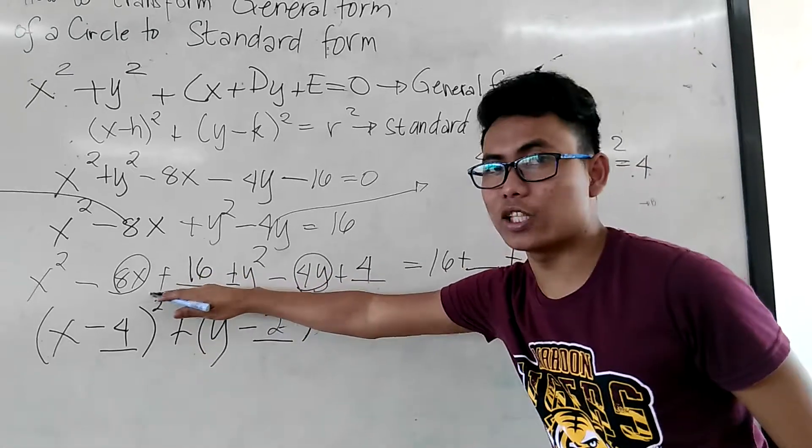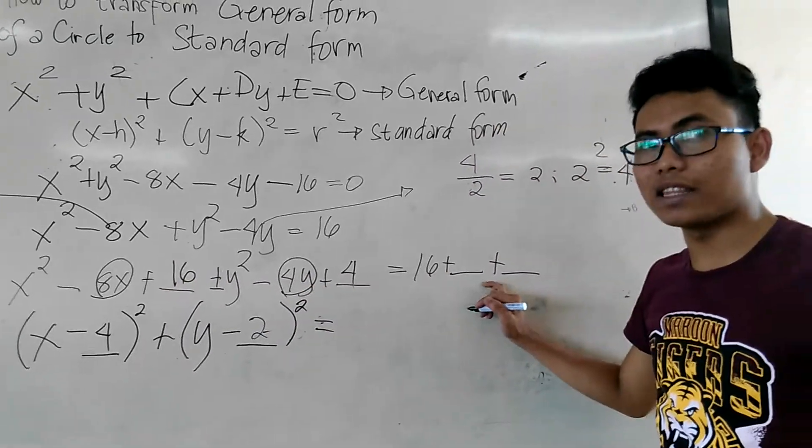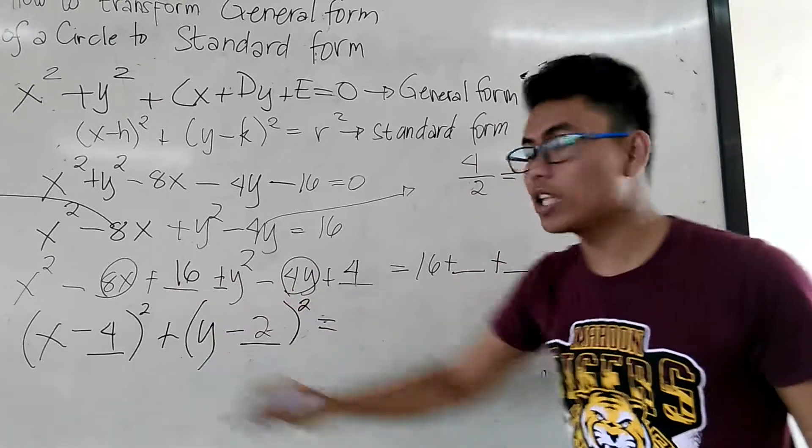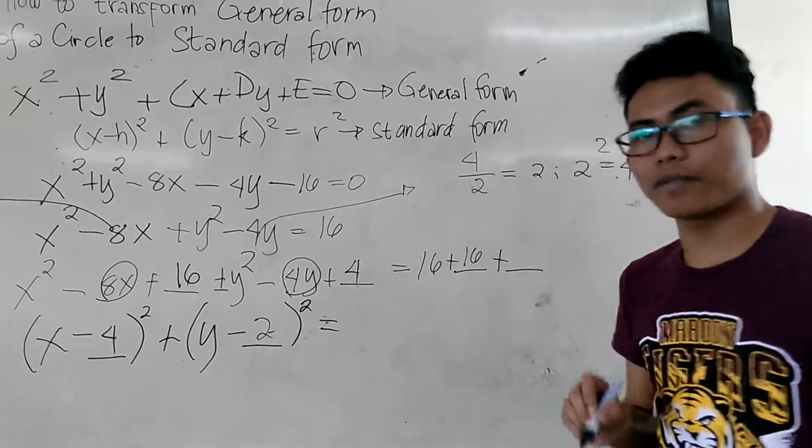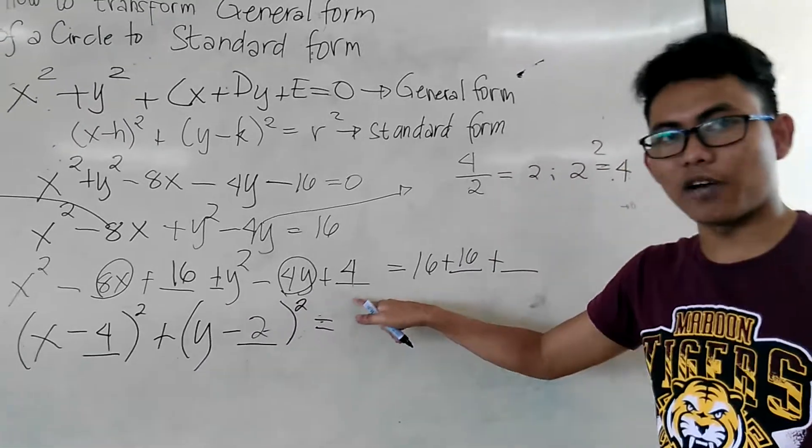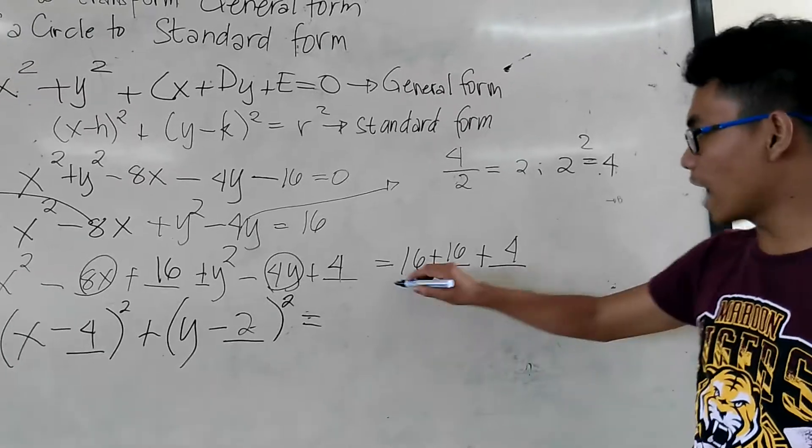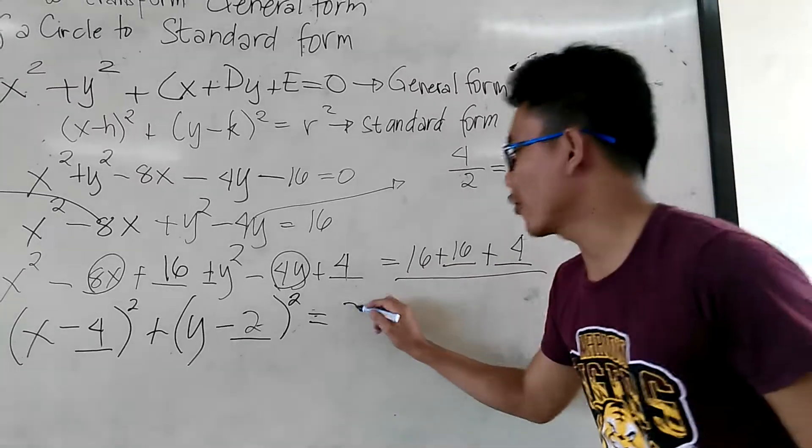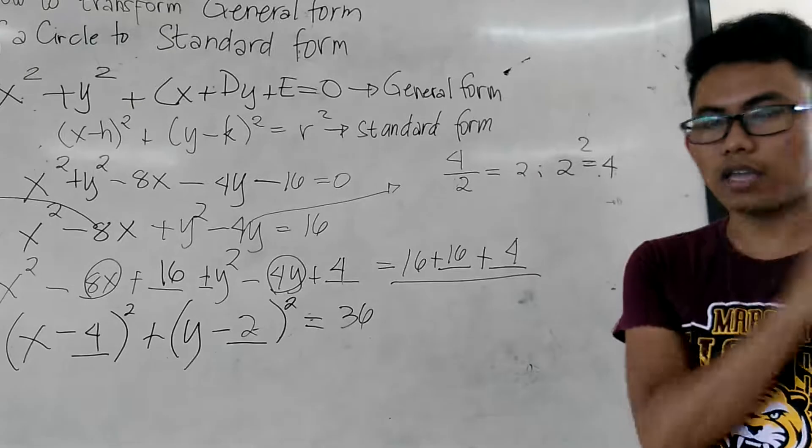Kapag nag-add ka dito, dito, mag-add ka rin dito. Diba? Nag-add ka rin ang 16 dito, kaya mag-add ka rin ang 16. Then, nag-add ka pa rin ang 4 dito, mag-add ka pa rin ang 4 dito. Kaya, ang sagot natin dito is 36. Okay?